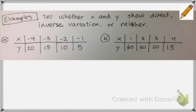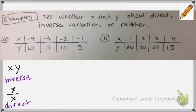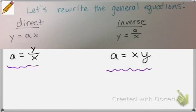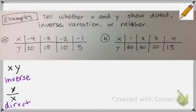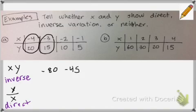So let's give this a try. This says tell whether x and y show direct, inverse, or neither. So remember, we're checking two things. We're going to check to see if there's a constant for x times y, which would show inverse variation. And we're going to see if there's a constant value for y divided by x, which would show direct variation. So once again, I'm using the rewrites when we solved for that constant of variation. So for a, let's check to see if there's an inverse variation. We're just going to multiply all of our x and y values together. So if I do x times y here, it's negative 80. Now if I do x times y here, it's negative 45. So since these two numbers are different, I can already tell that this is not an inverse variation.